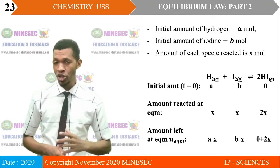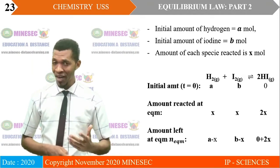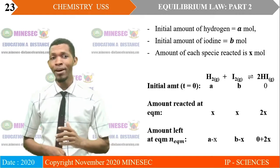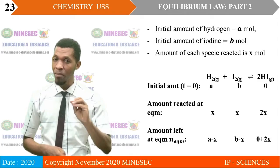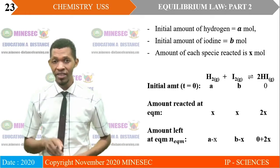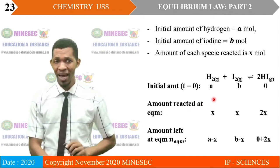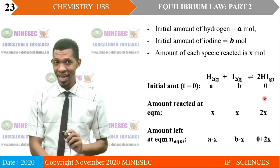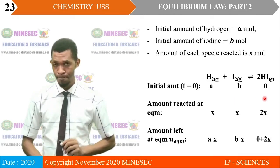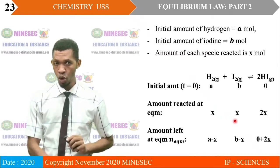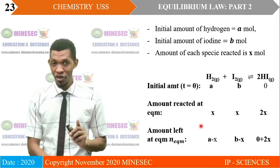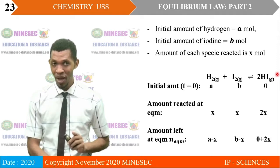If the initial amount of iodine is A moles and the initial amount of hydrogen is B moles, and assuming that the amount of each species that reacted at equilibrium is X moles, the amounts remaining at equilibrium can be determined as follows. Initially: A moles of H₂(g), B moles of I₂, and 0 moles of HI. If X moles of hydrogen reacted, then X moles of iodine also reacted to form 2X moles of hydrogen iodide. The ratio of amounts reacted is 1:1:2, the same as the stoichiometric coefficients.